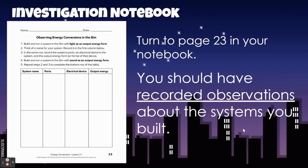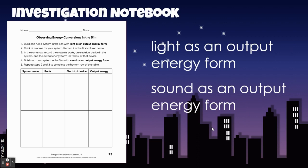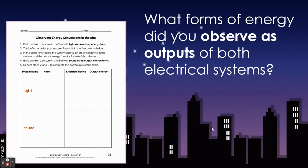You should have recorded two systems that you created. One needed to have light as an output energy form, and one needed to have sound as an output energy form. The first one had to do with light and the second one had to do with sound. You could have called them whatever you wanted, but here we'll refer to them as the light system and the sound system. We want to know what forms of energy you observed as outputs for both electrical systems.